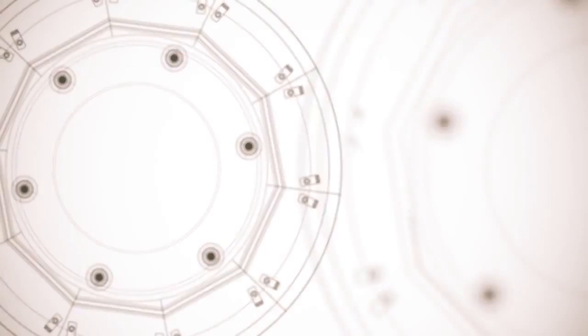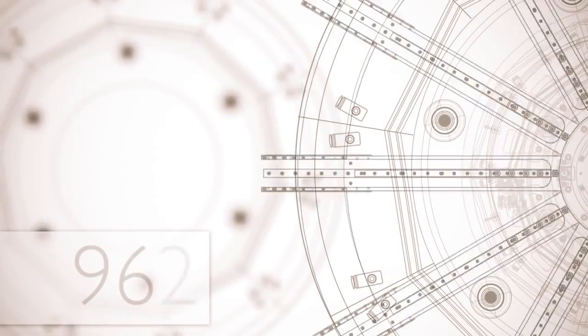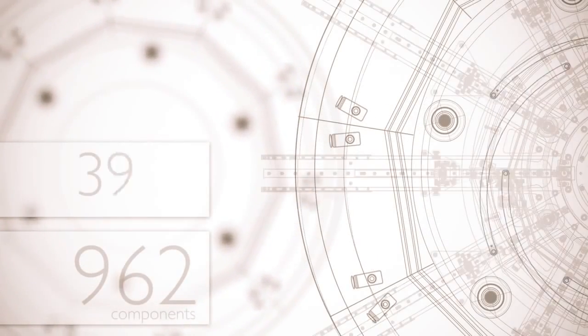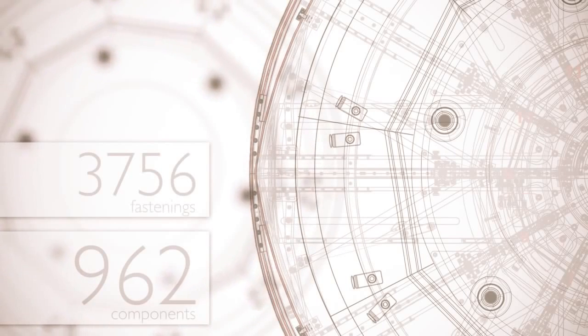Every single component of the table is now drawn on CAD. Every single one, every single screw, every single washer. A table like this has about 962 components and something like 3,756 fastenings. It's quite amazing the amount of stuff that's in there. Most of the parts that you see here are either laser cut or machined.